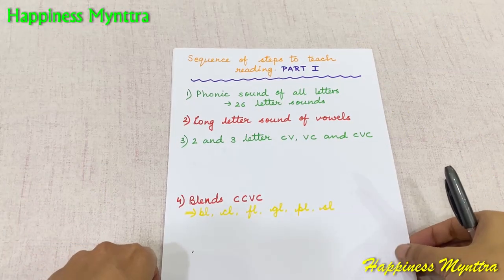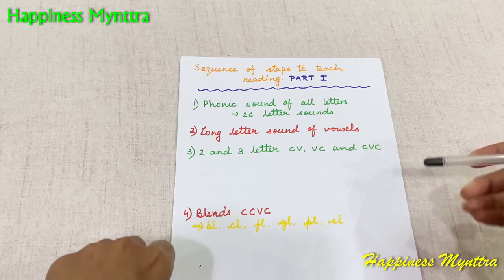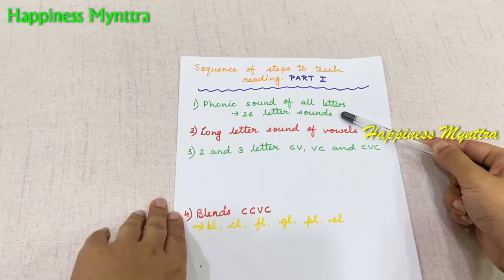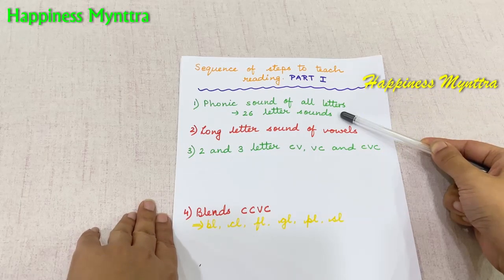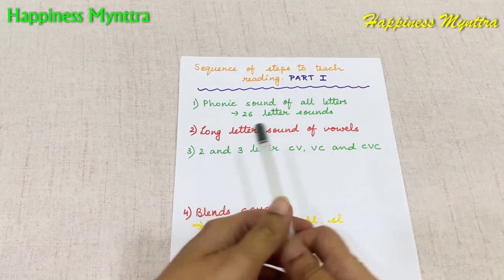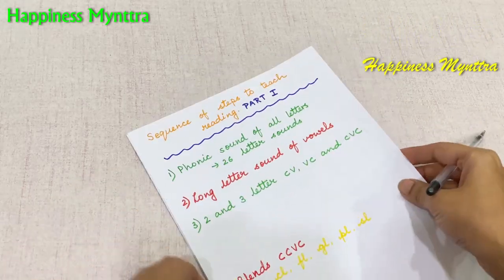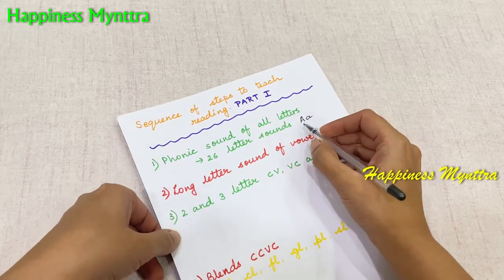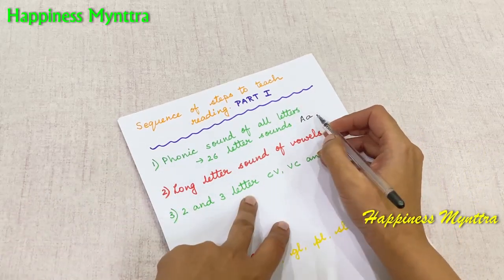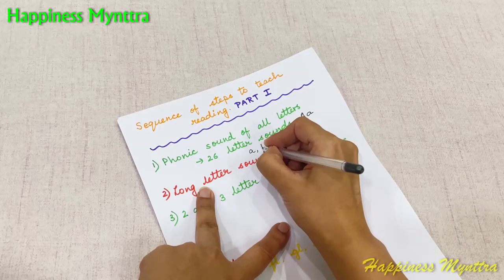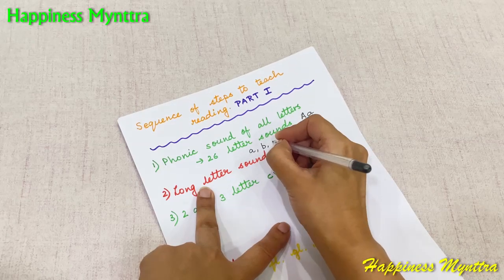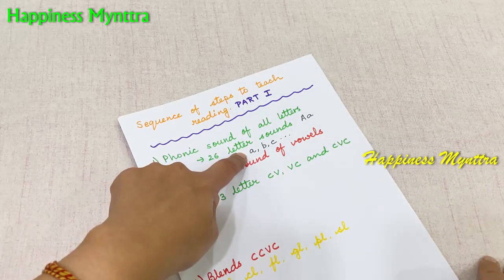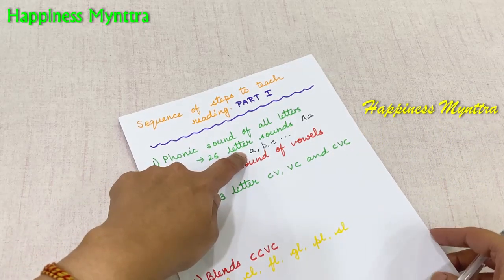When we want to teach reading to children, the first thing they need to know are the phonic sounds of all the letters. Initially, the 26 letters should be introduced with their phonic sounds and not their letter names. So they should not be taught 'A says A.' The children should quickly know that this is A, this is B, K, and so on. They need to identify the letter and know the sound of the letter.